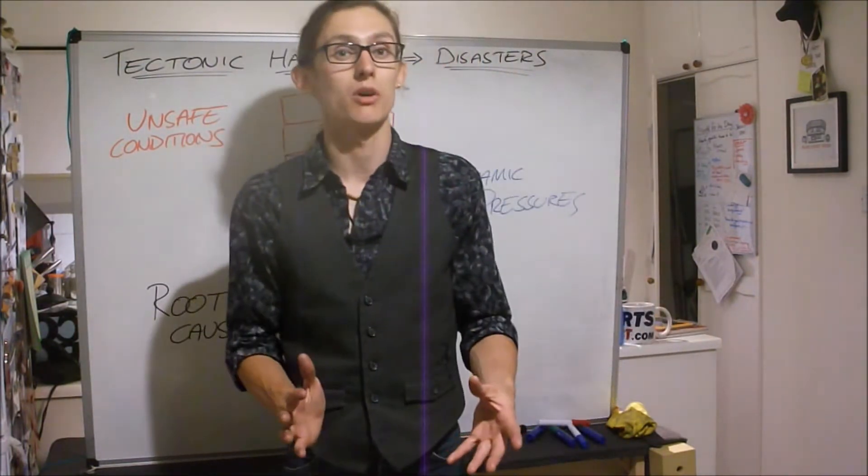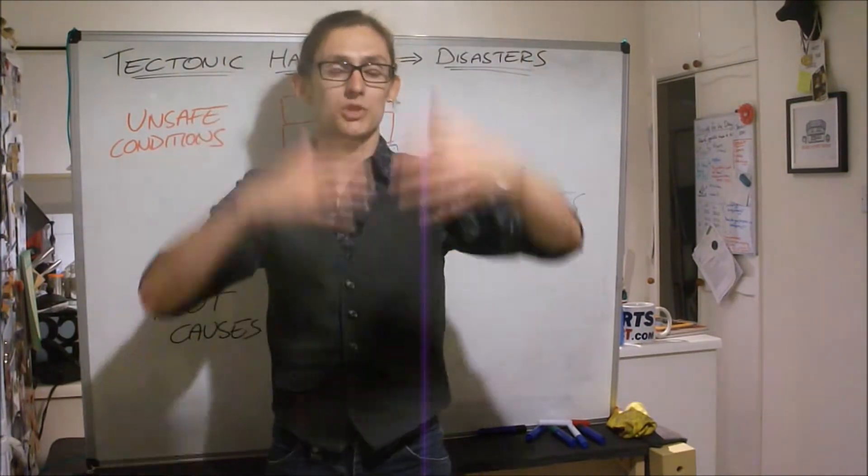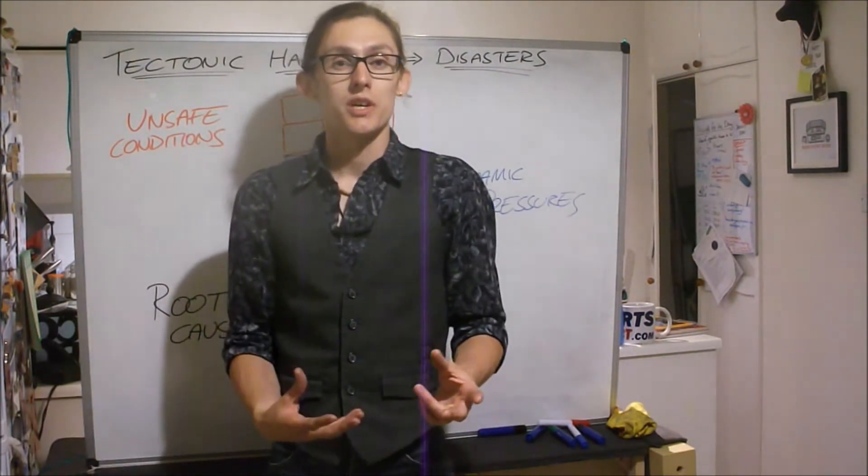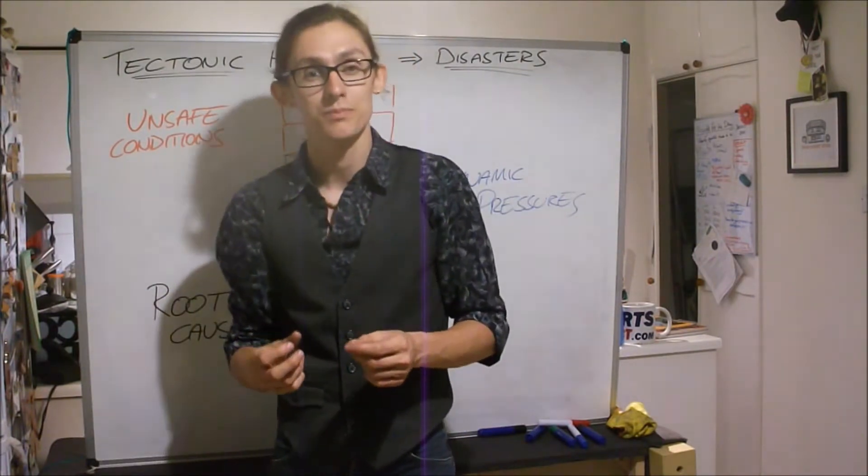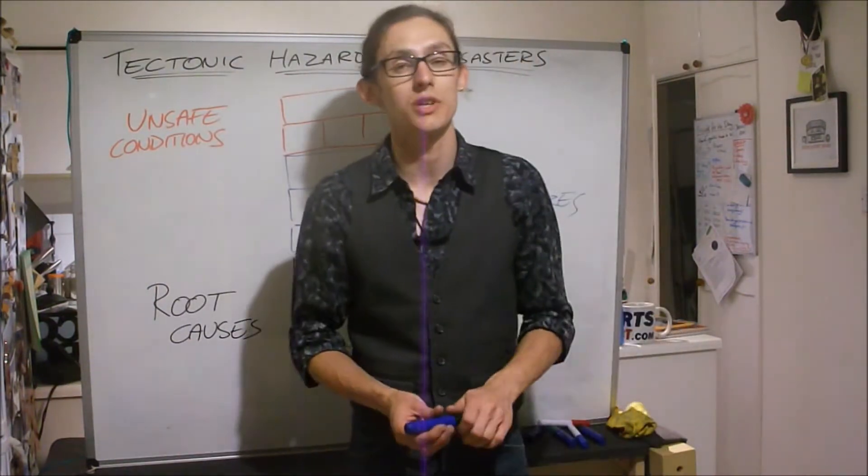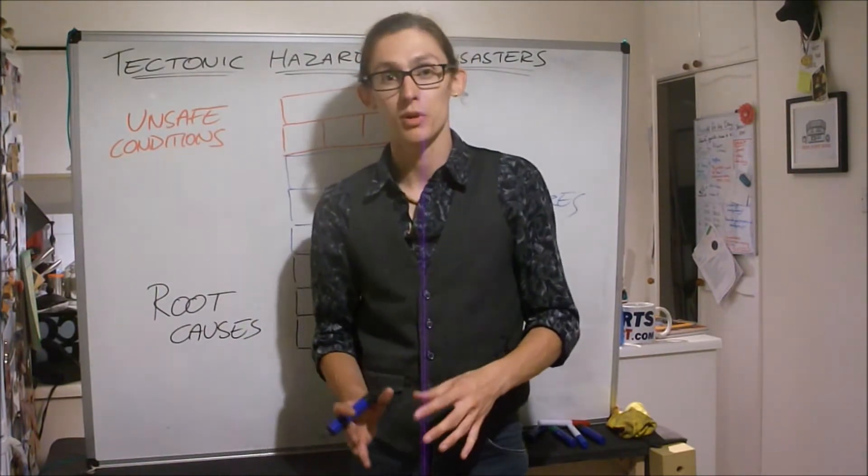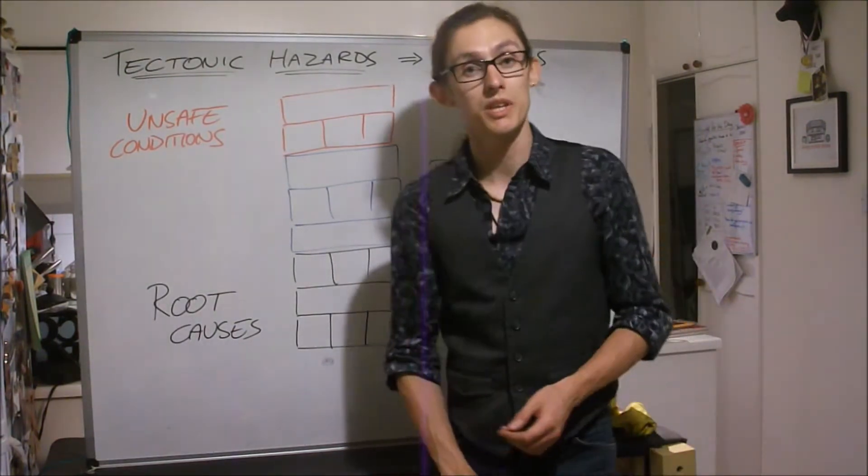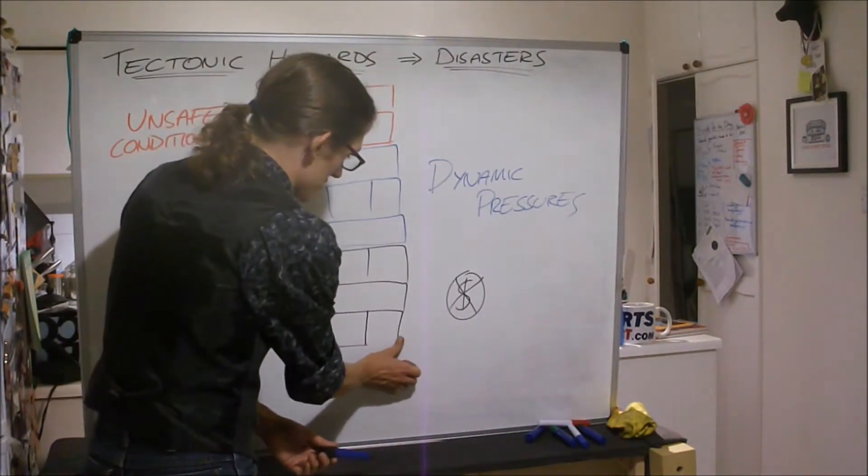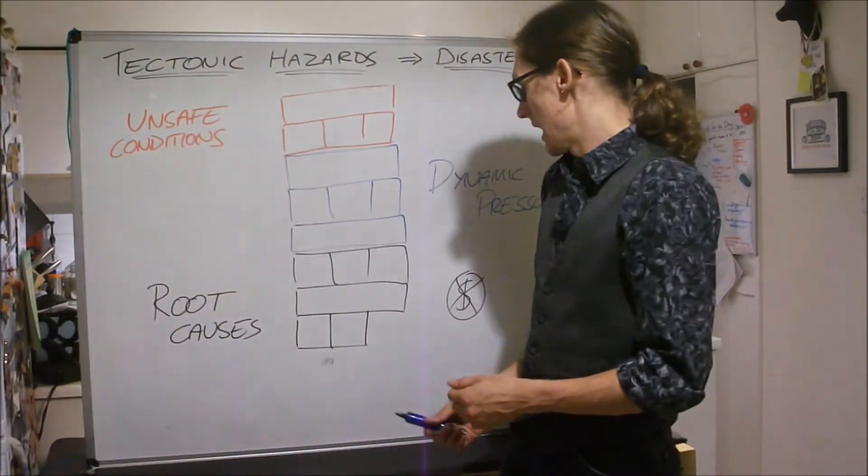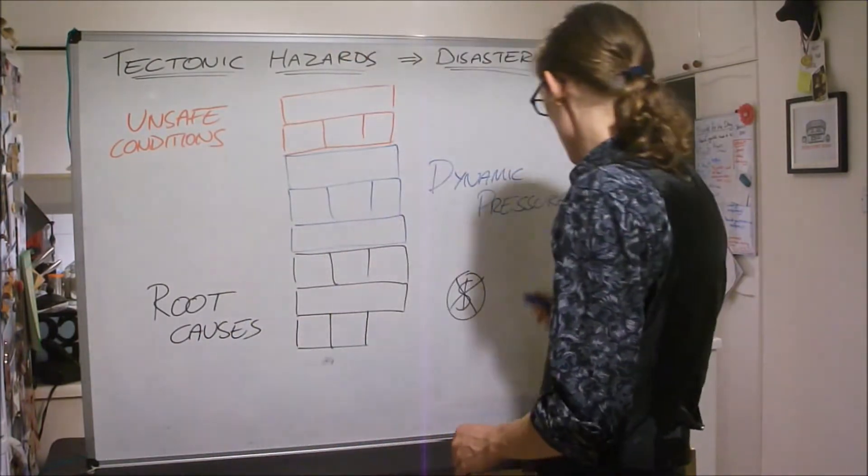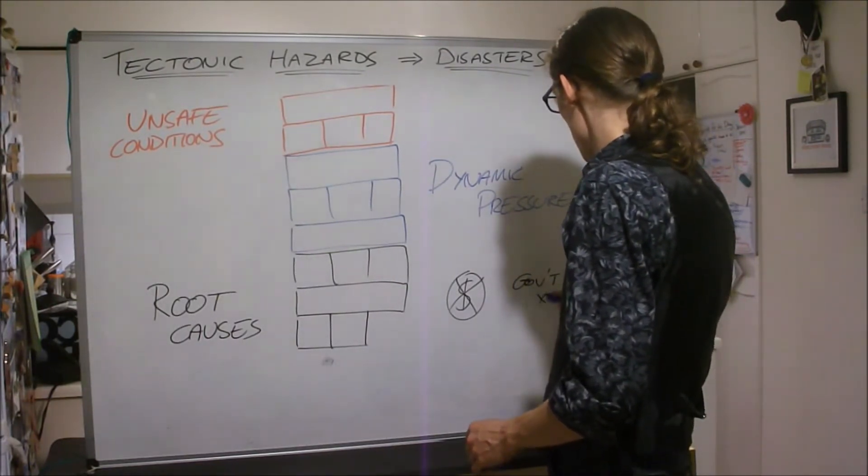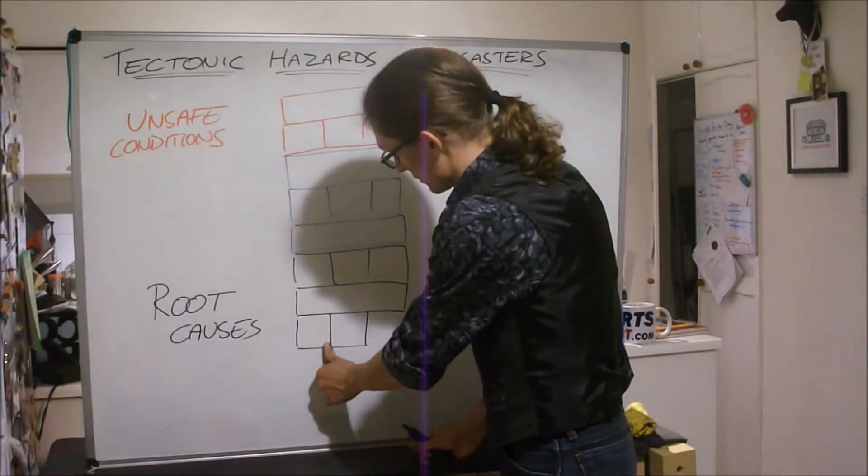I'm going to use the analogy of a tower of Jenga blocks. Imagine every society is built up of Jenga blocks, a Jenga tower, and in a vulnerable society, blocks get taken out. Let's think first about the root causes of vulnerability. This could be if you've got a country or a group of people who are poor - no money, lack of money. You could say that's a block taken out of the Jenga tower. We could also have politics. If you've got a bad government, that's another block taken out of the tower.